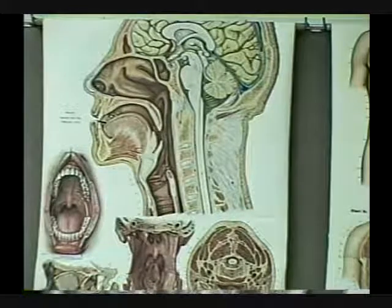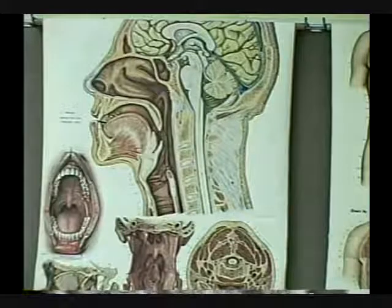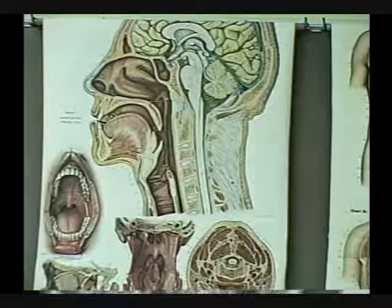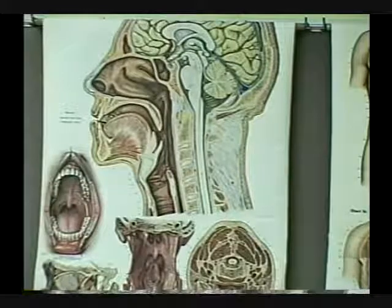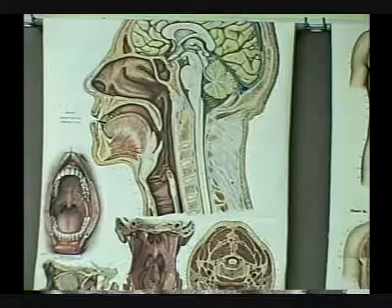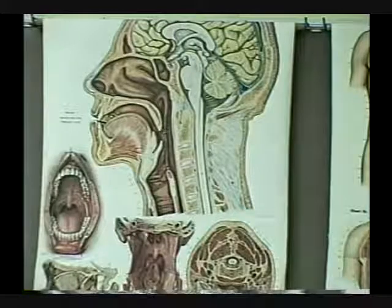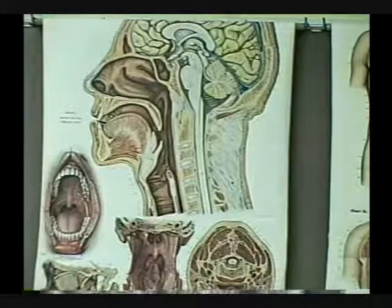This opening to the outside is called the external naris; the opening through here is called the internal naris, also known as the choana. Identify this cavity: the pharynx. Identify this portion of the pharynx: the nasopharynx. This portion: the oropharynx. This portion: the laryngopharynx.